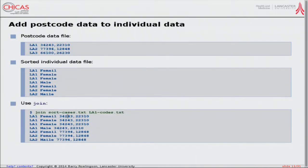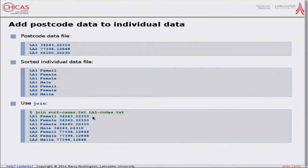You can even do something similar to a database join. If you've got two sorted files with a matching field — in this case the postcode area — it's a Unix command line one-liner to join the postcodes to the individual data, producing output where each case now has the postcode coordinates from the postcode file. That join is about as complicated a database operation as I've ever done. This is the sort of stuff I was doing 20-something years ago when R was rubbish, S-plus was expensive, and Arc Info was unusable.